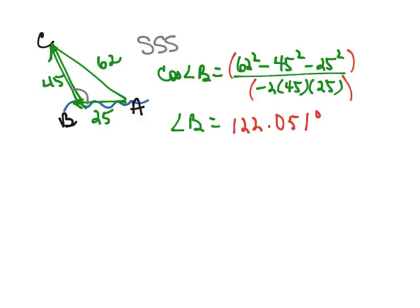So if we know that our angle B is 122.051 degrees and we want to write the bearing from point B to point C, then there's a couple of different ways to do this. First of all, remember to write a bearing, you have to have a north-south line.